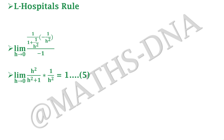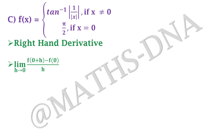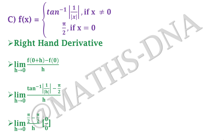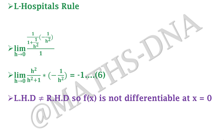Now find the right-hand derivative: limit h → 0 of [f(0 + h) − f(0)] / h = limit h → 0 of [tan⁻¹(1/|h|) − π/2] / h. This is also a 0/0 form. Applying L'Hôpital's rule: limit h → 0 of [1/(1 + 1/h²) · (−1/h²)] / 1 = limit h → 0 of h²/(h² + 1) · (−1/h²), which equals −1. Call this equation 6. The left-hand derivative is 1 and the right-hand derivative is −1, so f is not differentiable at x = 0.